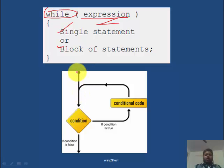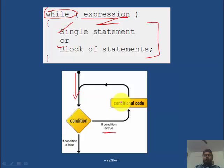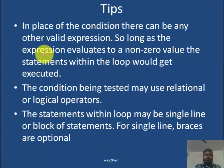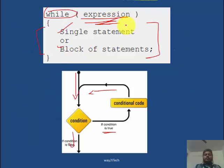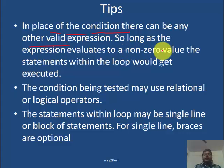This is the flow diagram. First, the condition is checked. If the condition is true, the conditional code executes, and after executing, the condition is checked again. If the condition is again true, we execute the block — this process repeats till the condition is false. Non-zero value means true and zero means false; as long as the expression evaluates to a non-zero value, the loop continues its execution.